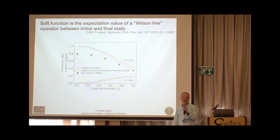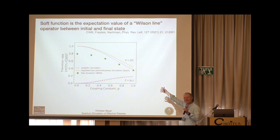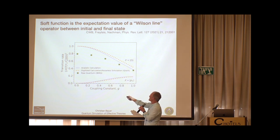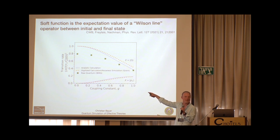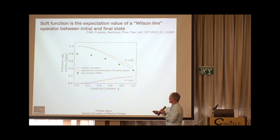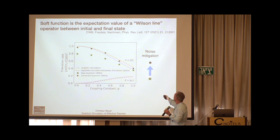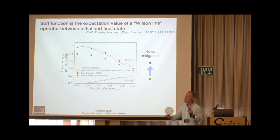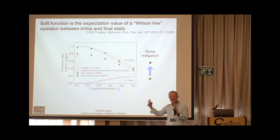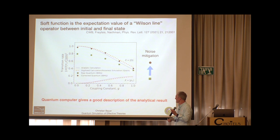With three lattice sites and two-bit digitization, we see the yellow curve deviates slightly from the exact analytical blue curve. We then ran this on IBMQ — about three years ago; it would likely look better on current devices. I'm an optimistic person — it had the right shape. Applying zero-noise extrapolation and other noise mitigation techniques, we got the black dots, which look quite close to the yellow curve. This tells me quantum computers really have the ability to do calculations like this.